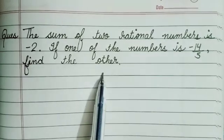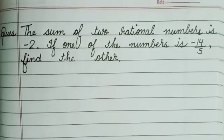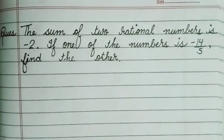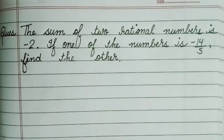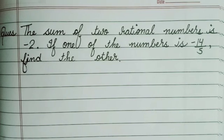As we can see in the question, it is given that the sum of two rational numbers is minus 2 and one number is minus 14 upon 5. This is directly given that we have to find the other number.